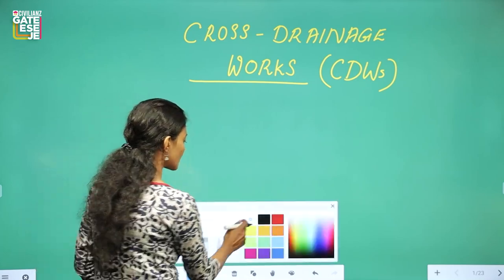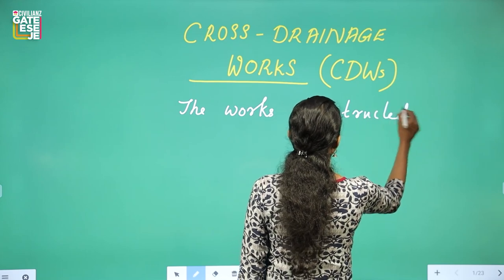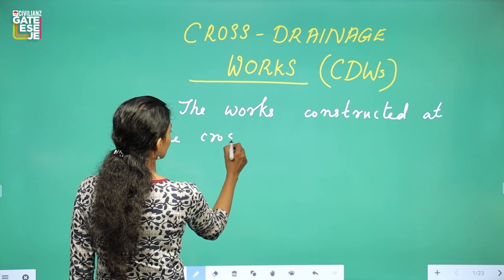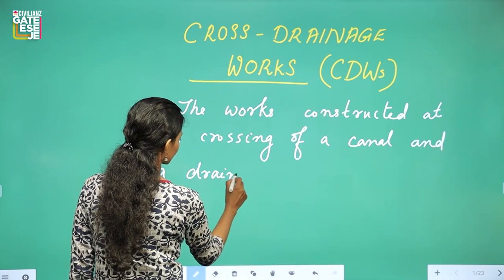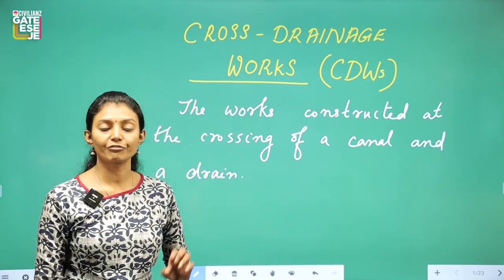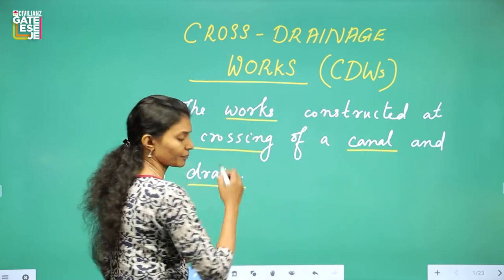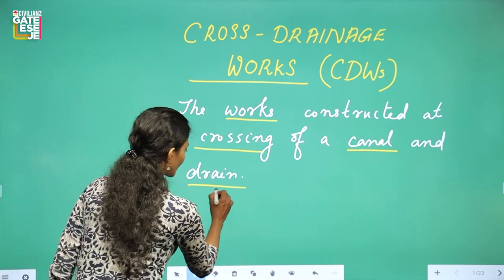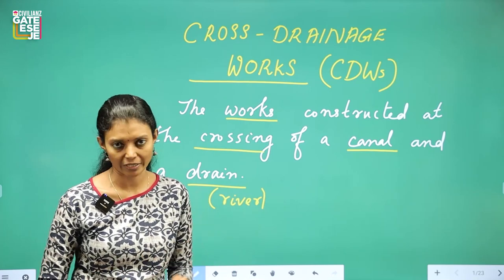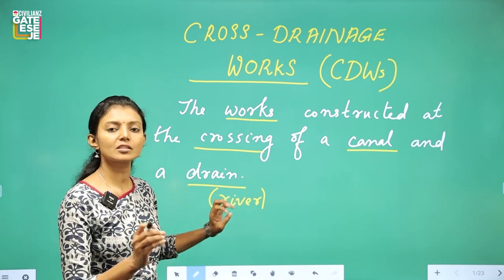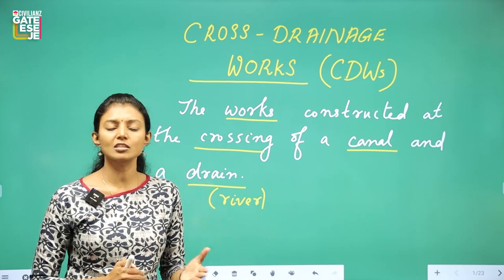As the name suggests, a cross drainage work is a structure constructed at the crossing of a canal and a drain. In cross drainage work, the word 'drain' indicates a river — the natural drain — while a canal is an artificial drain. So when a canal crosses a river, we construct a cross drainage work.